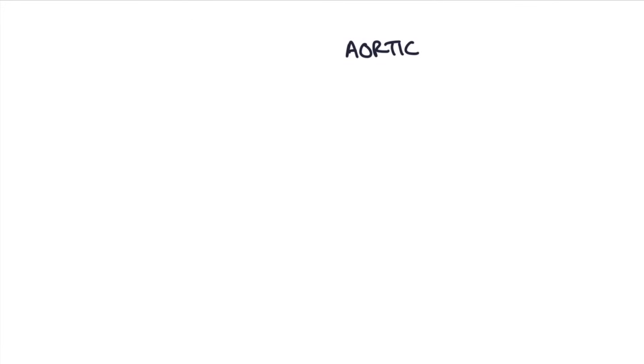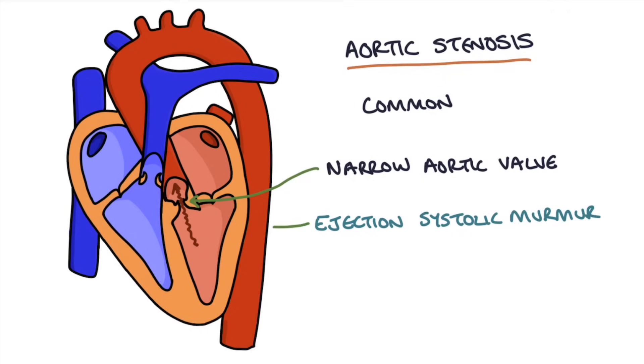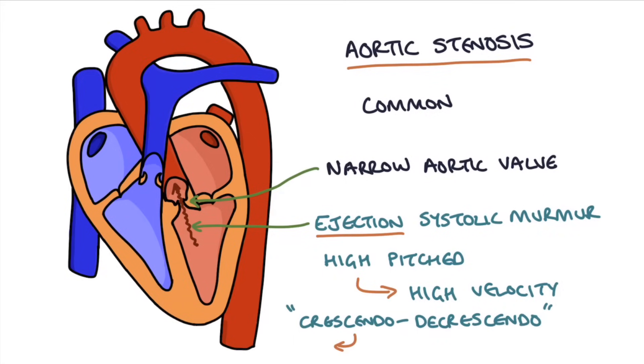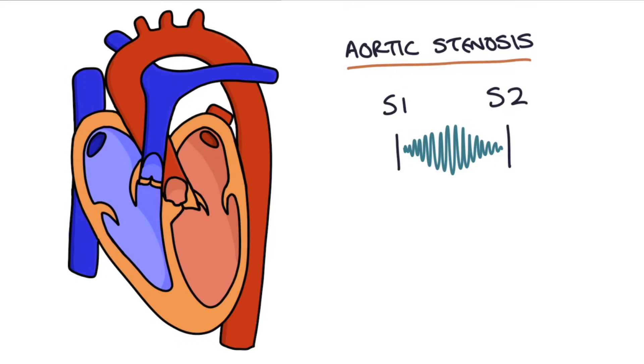Next let's talk about aortic stenosis. Aortic stenosis is probably the most common valve disease that you'll encounter. It essentially means a narrow aortic valve, and so as blood flows through this narrow aortic valve during systolic contraction there will be turbulence of blood flow. This causes an ejection systolic murmur, and this is a murmur that occurs while blood is being ejected from the left ventricle, and it's a high-pitched murmur because of the high velocity of systolic contraction. It's also what we call a crescendo decrescendo murmur as it gets louder and then quieter due to the speed of blood flow during the different times of systolic contraction. You'll hear the first heart sound and the second heart sound, and then between those heart sounds you'll hear a systolic murmur that gets louder and then quieter.